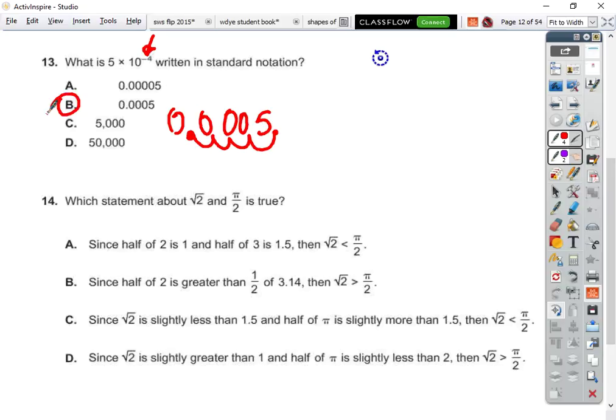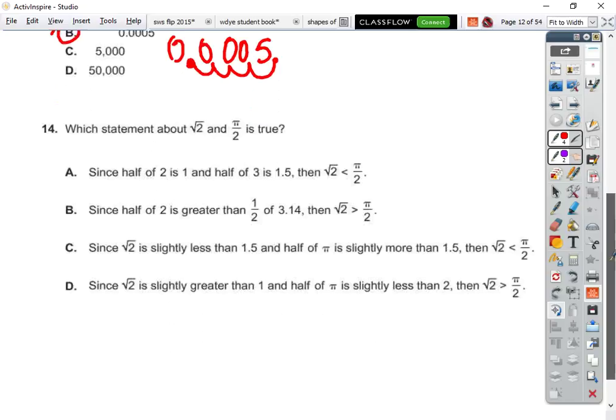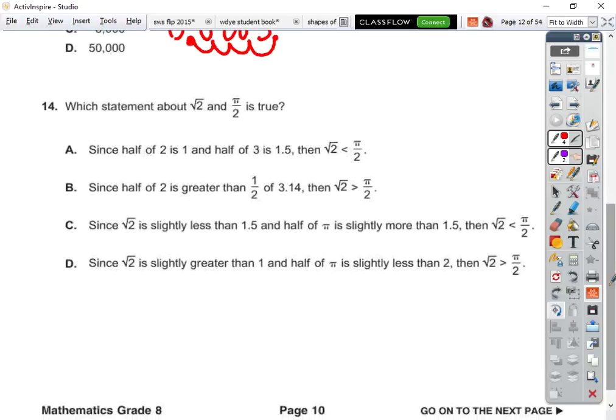Good job, Anya. The third grader got it before the answer was revealed. Which statement is true about the square root of two, and pi over two. Okay. They're both irrational numbers. We know that.